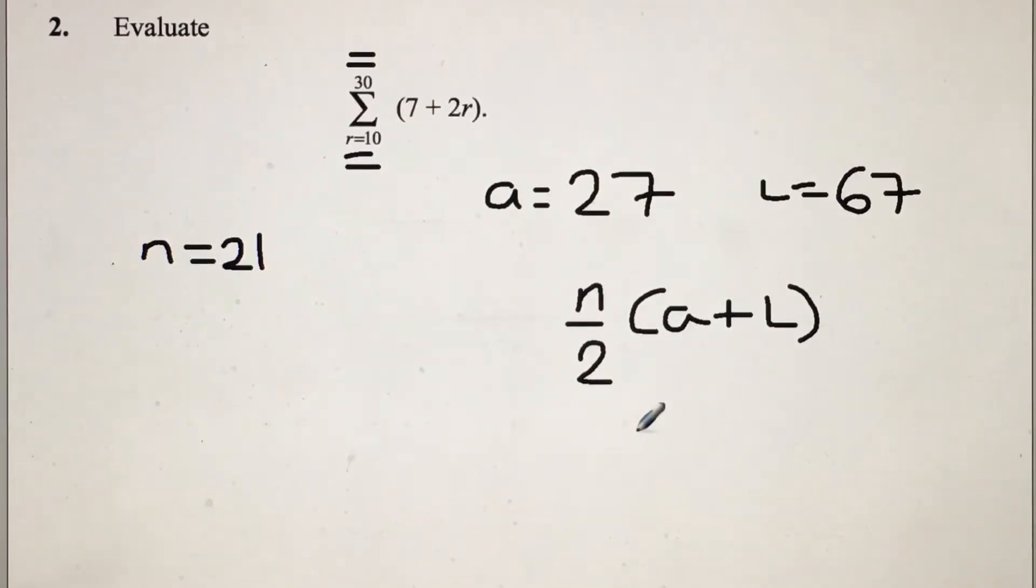At this point, all I'm going to do is substitute the values into the equation, so it's 27 plus 67, which gives us 94.